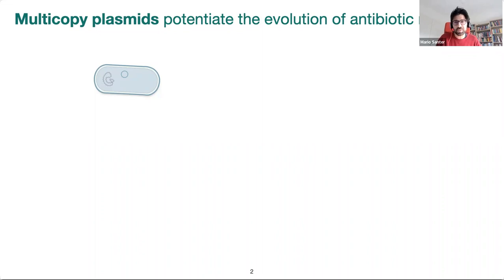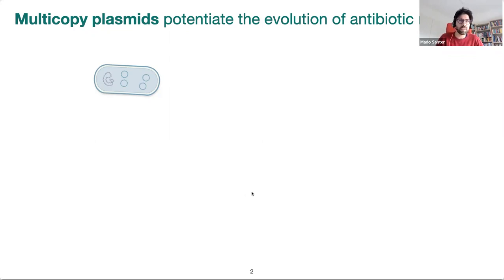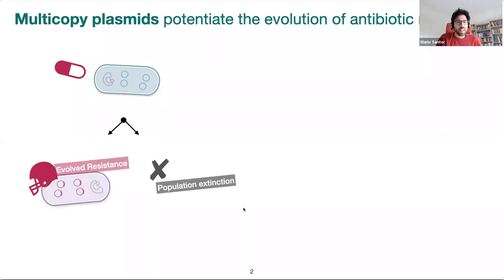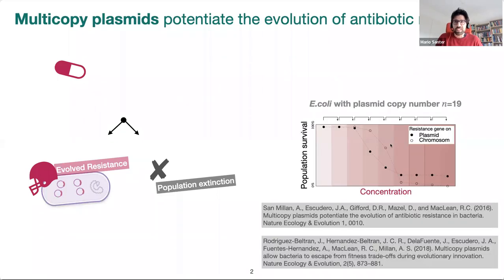As it was already mentioned a few times in the workshop, there are many plasmids with multiple copies. Experimental studies from recent years have shown that multicopy plasmids potentiate the evolution of antibiotic resistance. For example, Alvaro Sanmilán and colleagues showed in a paper from 2016 for E. coli with a plasmid that has a copy number of 19, that it evolves resistance against high antibiotic concentrations.